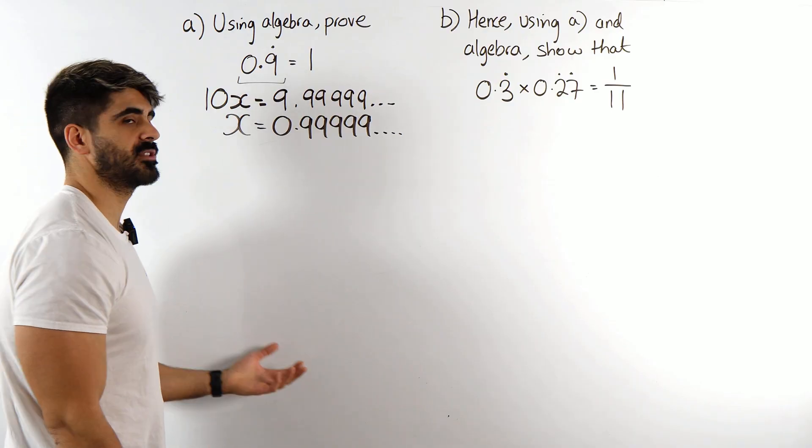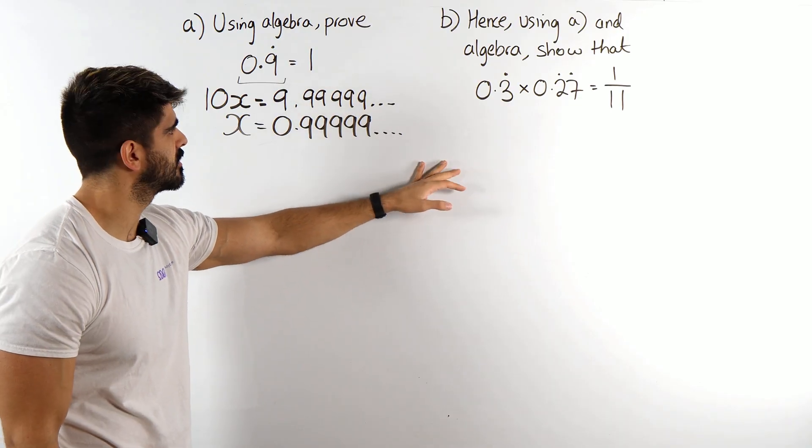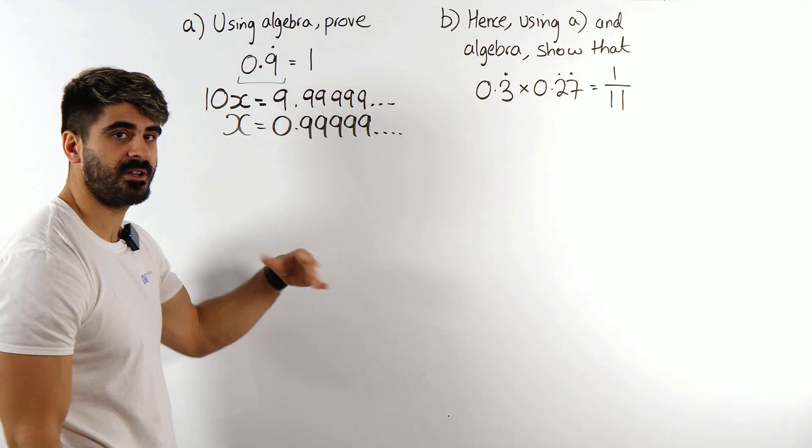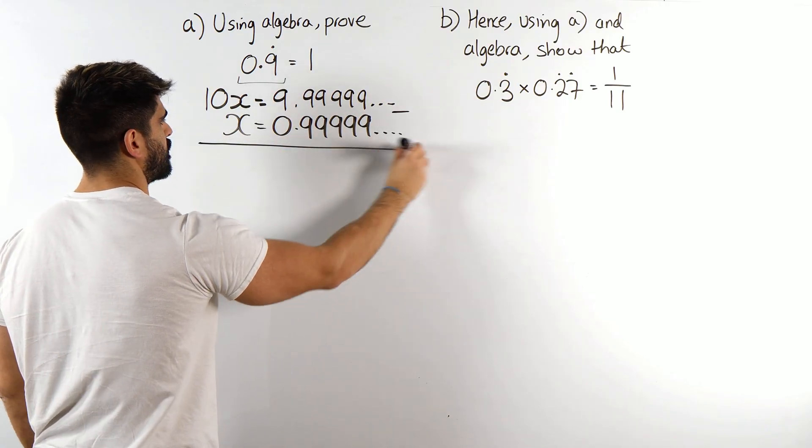The next thing we're going to do is subtract. The reason we're doing this is we're trying to cancel out that recurrence. Now this whole concept comes from geometric sequences which we will study when you all take A level maths.